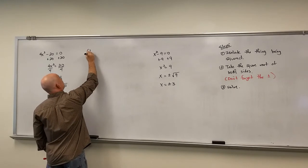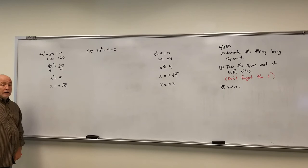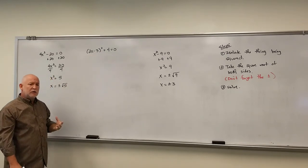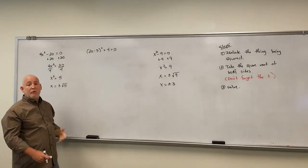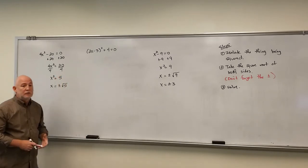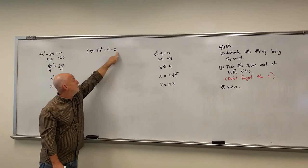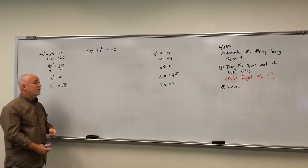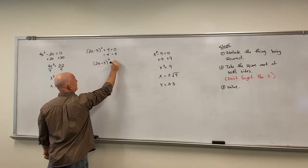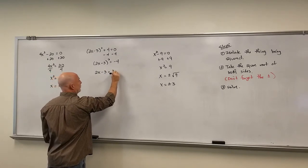What if we have (2x − 3)² + 4 = 0? This is a quadratic equation because if we distributed everything out, the highest power would be 2. We can extract the root because (2x − 3) is our 'something' being squared and everything else is numbers. Step 1: isolate the thing being squared, giving (2x − 3)² = −4. Step 2: take the square root of both sides, so we have 2x − 3 = ±√(−4).